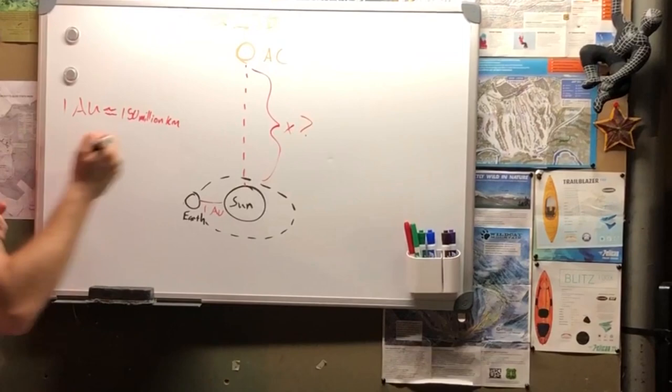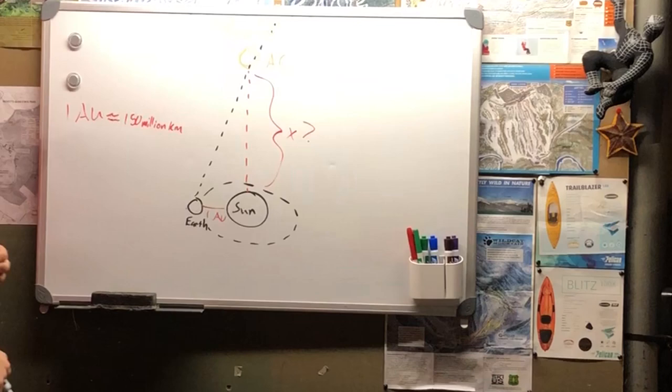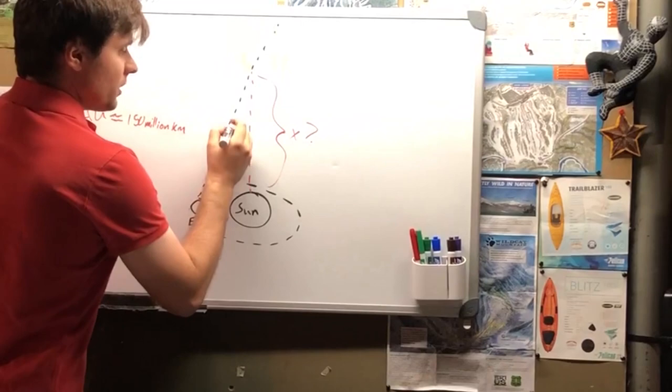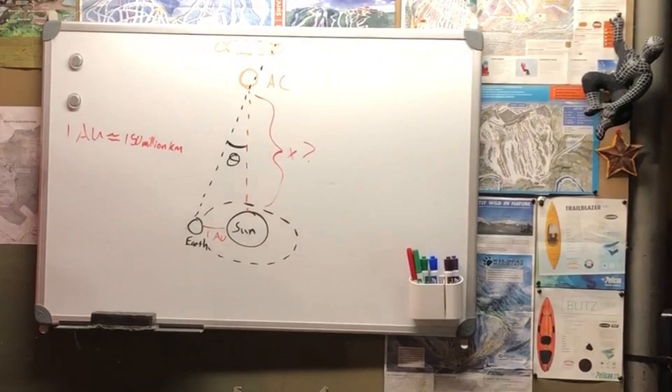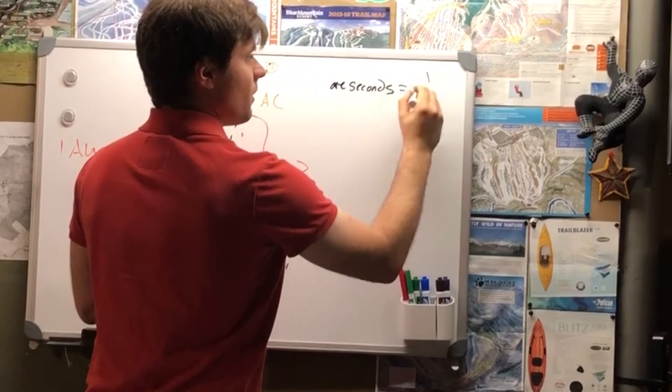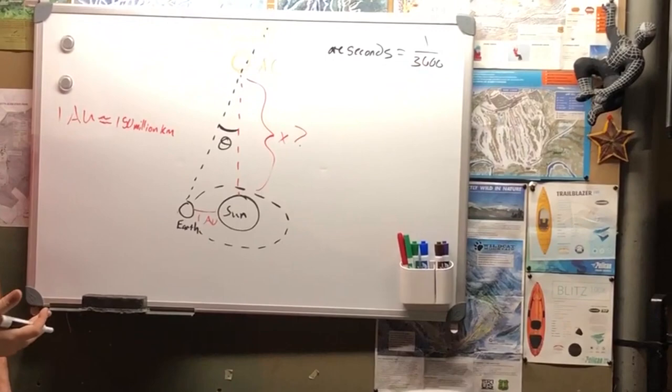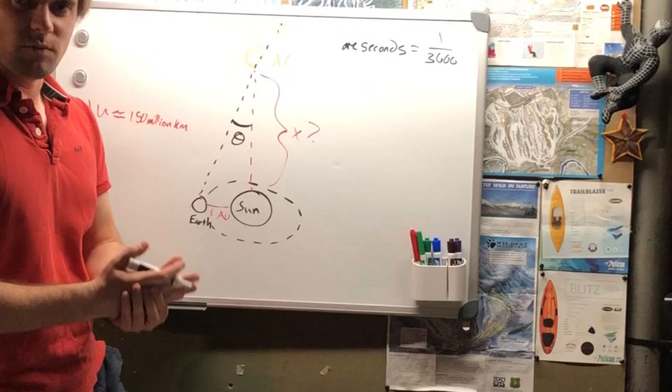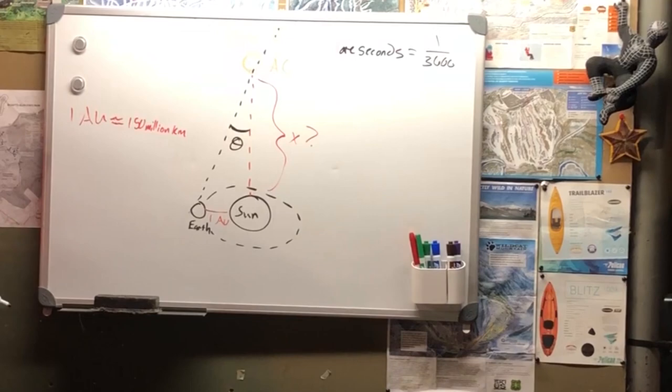If we draw a line from earth to one of the points where Alpha Centauri looks like it is, from earth's perspective, we can actually get this angle right here. Alright? And that is our angle of parallax, or our parallax angle. And usually those are measured in arc seconds, which is about 1/3600th of a degree. Alright? So how does that help us? How are we going to use this information in order to calculate this distance? Because that's what astronomers use parallax for.